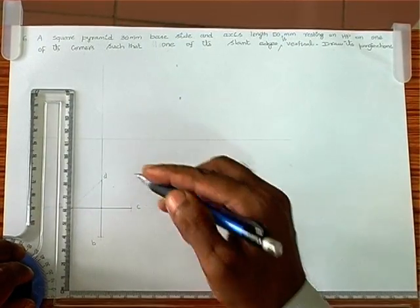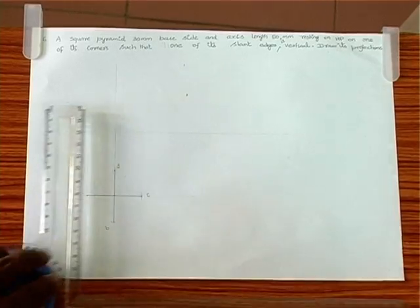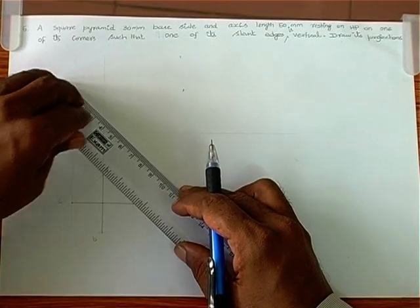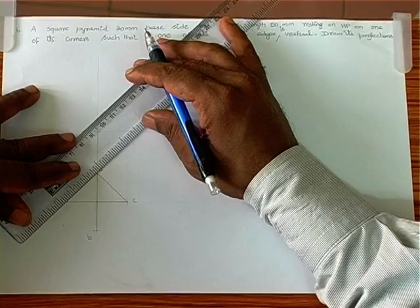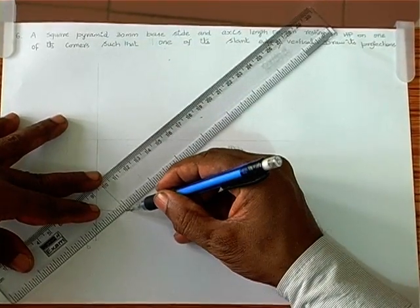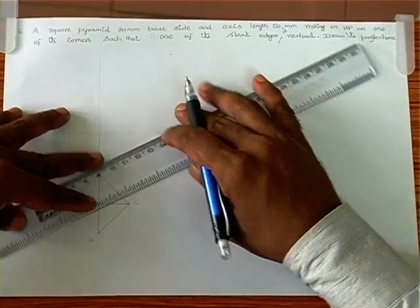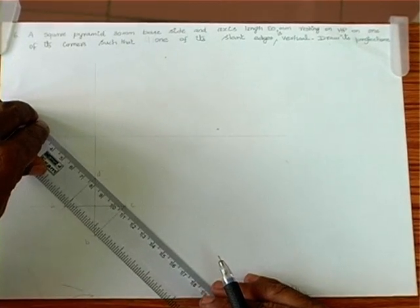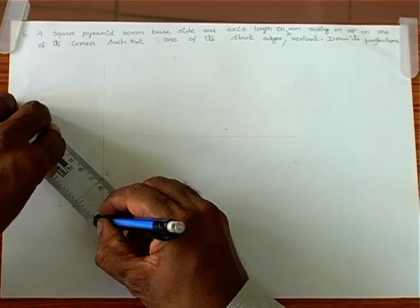We can project this and also protect the other points. Now we can complete the square by joining all four points. This is the required square in corner position. We have the second line, the third line, and we connect A to B.